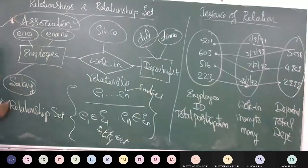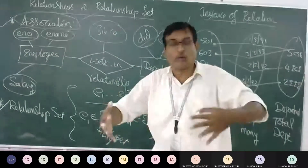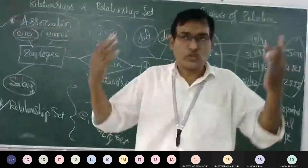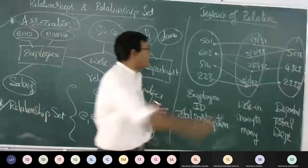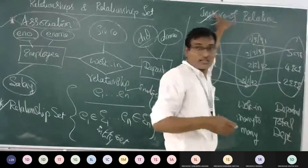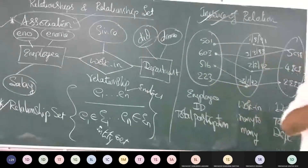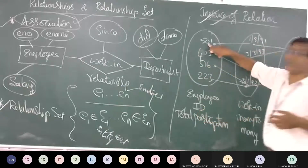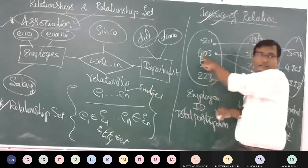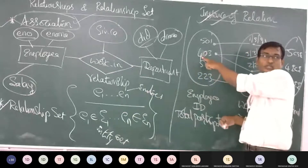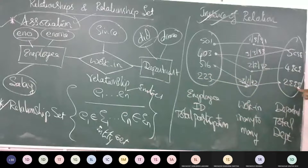We talked about association and relationship sets. For example, a college has 200 or 300 employees — 200 employee IDs and 200 employee names. All those records we call instances. So employee 1, employee 2, employee 3, and employee 4 are instances. Assume employee D works in the CSE department — his ID starts with 5. If he works in the ECE department, his ID starts with 4. The first entity set has instances: 501, 403, 560, and 223.